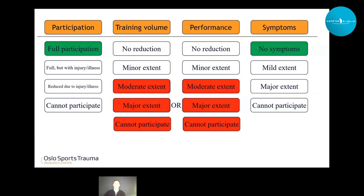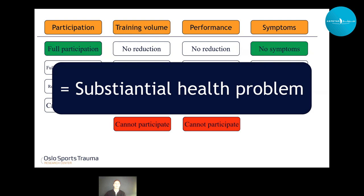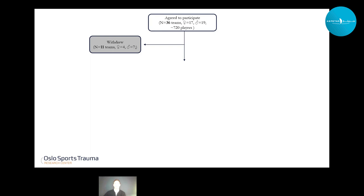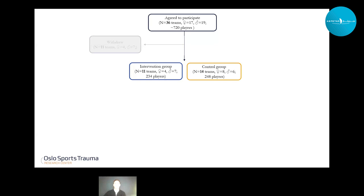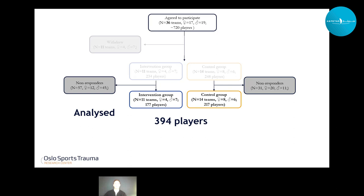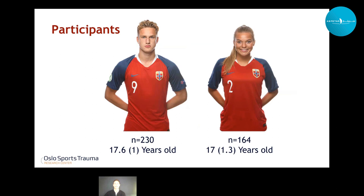If they reported a moderate problem or higher in training volume or performance, they were considered to have a substantial health problem — the secondary outcome. Regarding recruitment: 36 teams agreed to participate, but after randomization 11 withdrew, leaving us with 25 teams — 11 in the intervention group and 14 in the control group. After removing non-responders, we ended up with 394 players across the two groups — the best elite youth players in Norway from both genders.